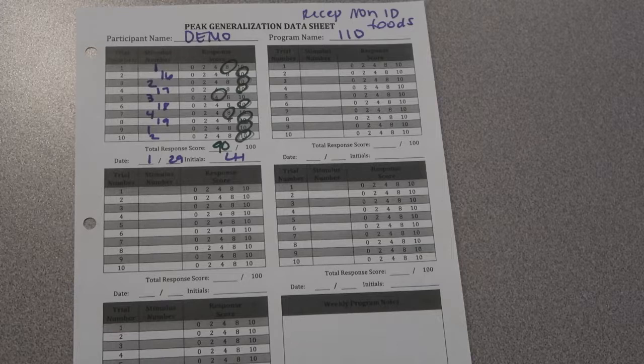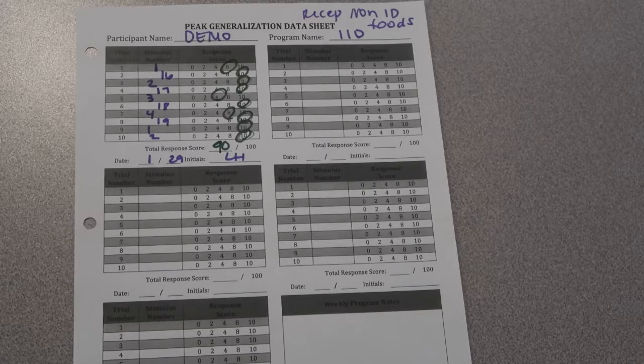Alright, go ahead and check your scores for PEAK generalization, receptively ID non-identical foods, 11-D.